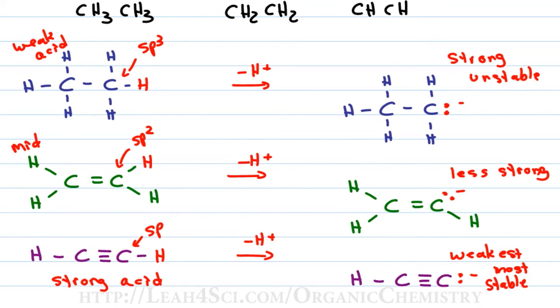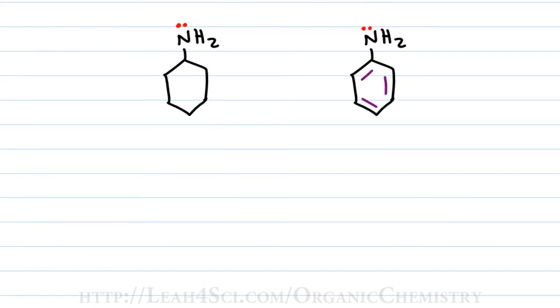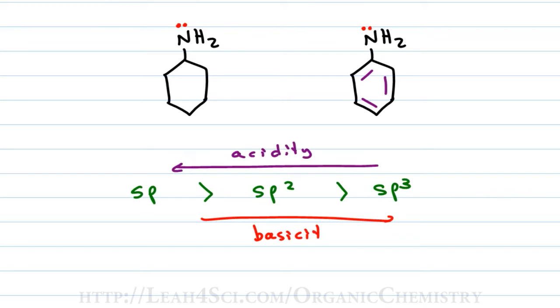But this doesn't apply just to acids. We can also look at bases in the exact opposite direction. If we're saying that an sp hybridized atom is more acidic than something sp2 which is more acidic than something sp3, we can say that acidity goes to the left from sp3 being the least acidic to sp being the most acidic. Now if acids are inverse to bases, meaning the stronger something is as an acid, the weaker it is as a base, we can say that basicity goes in the exact opposite direction. That means something sp is most acidic but least basic, and sp3 which was least acidic is going to be most basic.